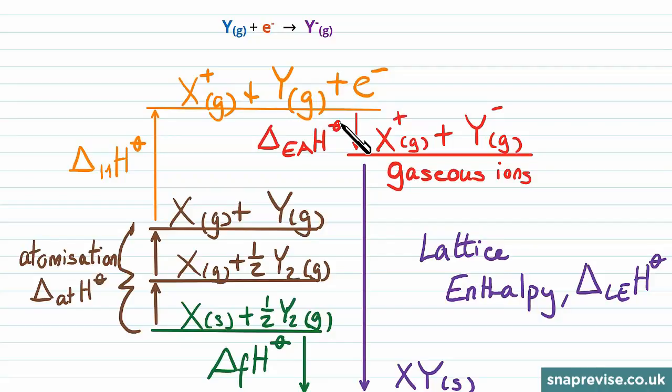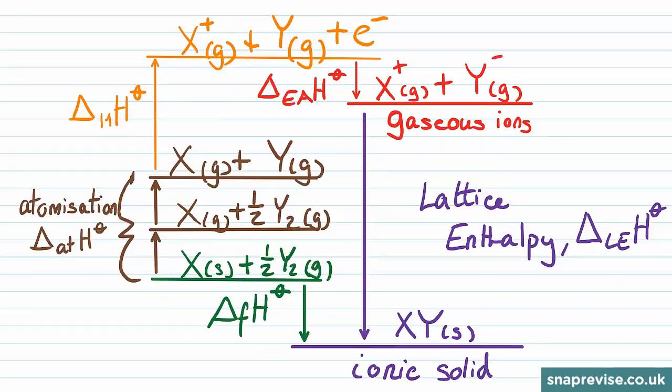It takes a chemical system, and then when there are endothermic changes, so energies given to the system, we have these up arrows, so atomization and the first ionization energy are endothermic. And then when we have energy released from the system, we fall in height again on the diagram. So you can see that both the electron affinity for the first electron affinity and the lattice enthalpy are both exothermic.